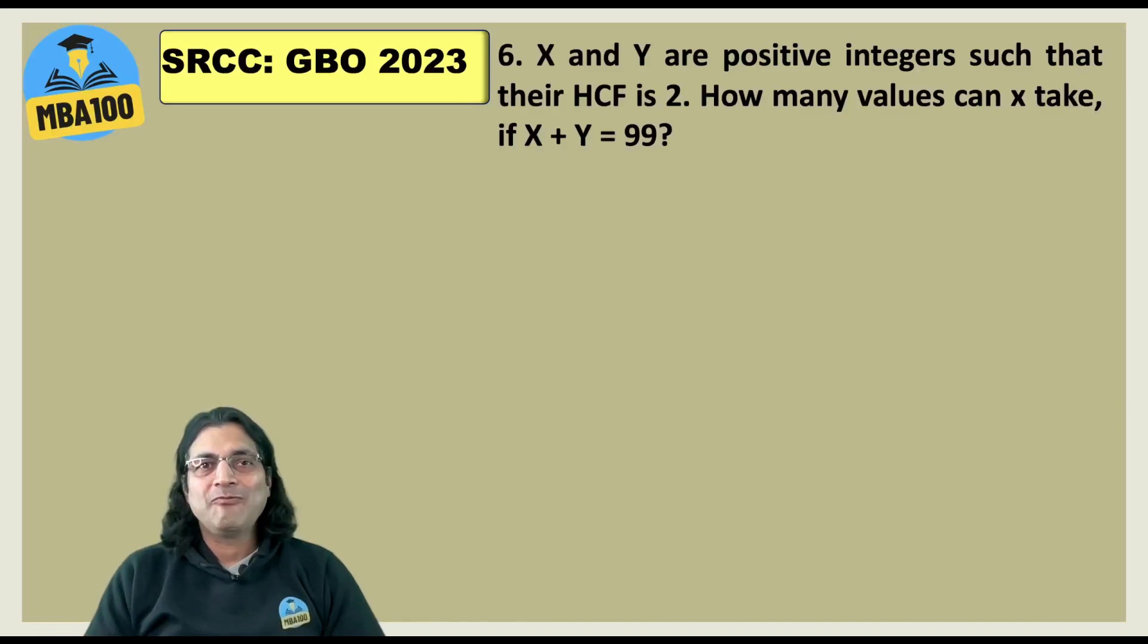What about this one? X plus y is equal to 99. HCF of x and y is 2. So both x and y are even numbers. So how can sum of two even numbers be 99? Hence the answer is 0.